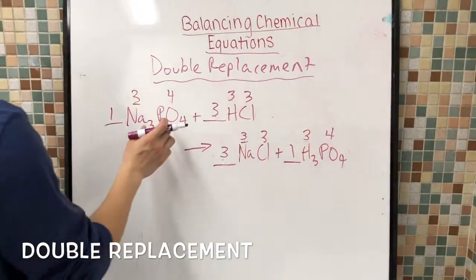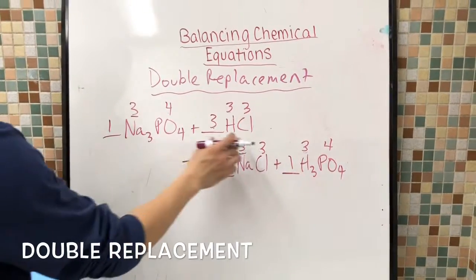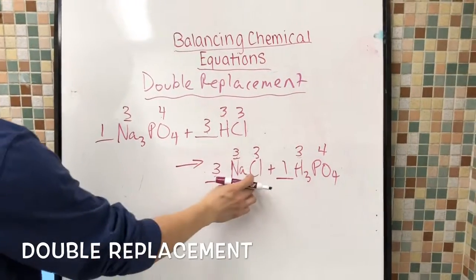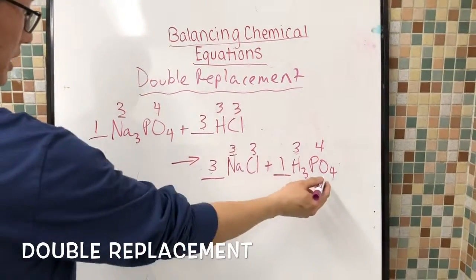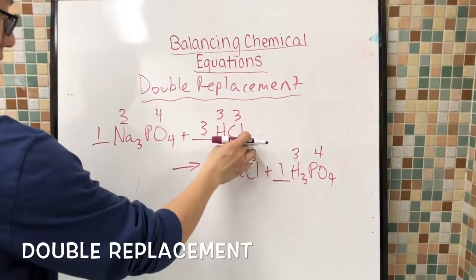And if you look at it, we can see all the balances in both sides of the equation. Na has three, Na has three, PO has four, H has three, and chlorine has three.